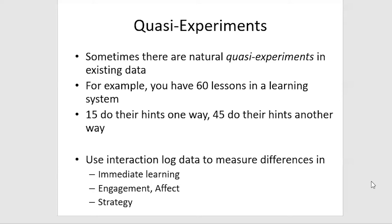We can then use interaction log data to measure differences in immediate learning, engagement, affect, and strategy — to see what it looks like if we do hints one way or the other. A quasi-experiment is never as conclusive as an A-B test, and no A-B test is ever fully conclusive either, because you probably didn't do it on all possible learners or all possible content. But it still provides useful information that we can use to improve our designs.